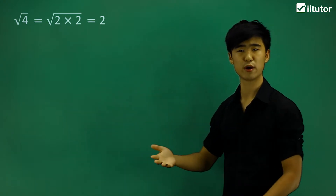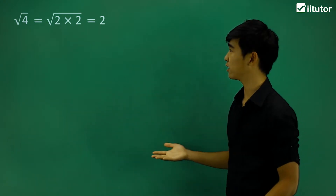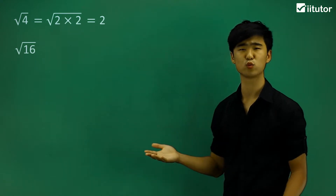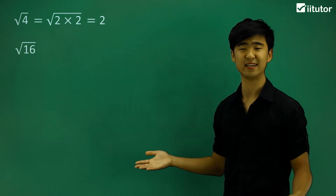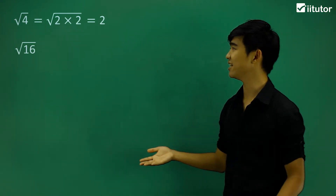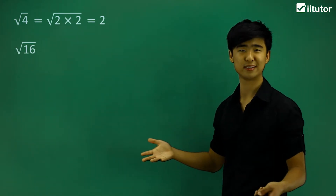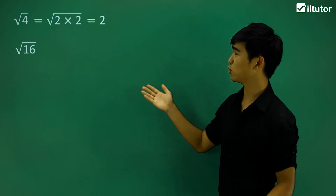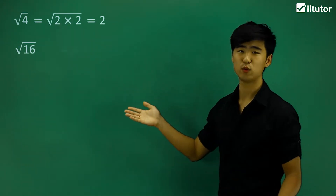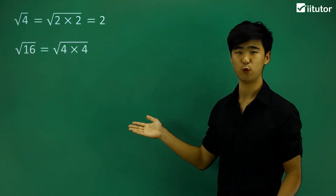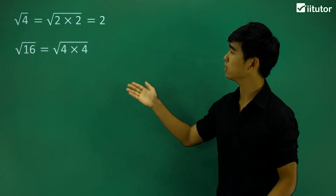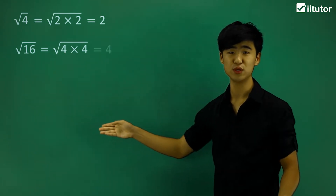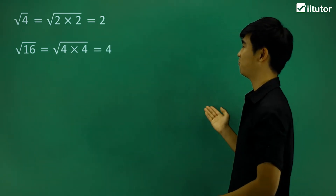This is how the square root is going to work. Now if we look at another example, we have the square root of 16. 16, again, we know is a square number. So what is it a square of? 4 squared, or in other words, 4 times 4. And we can just cancel out the square root symbol, and we're left with just 4.